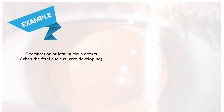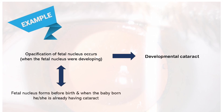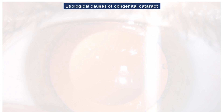For example, opacification of the fetal nucleus occurs when the fetal nucleus fibers were developing. Because opacification occurred during development of fibers, we call it developmental cataract. But the key point is that the fetal nucleus forms before birth, so when the baby is born, he or she is already having cataract. We call it congenital cataract, based on the definition of the term congenital — conditions that are present since birth.